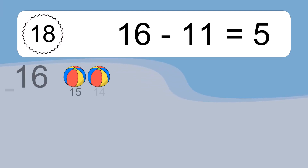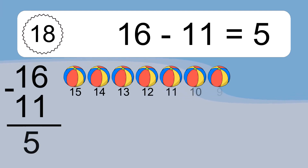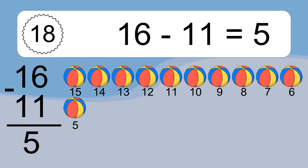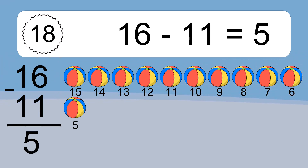16 minus 11 equals 5. Let's count it: 15, 14, 13, 12, 11, 10, 9, 8, 7, 6, 5.